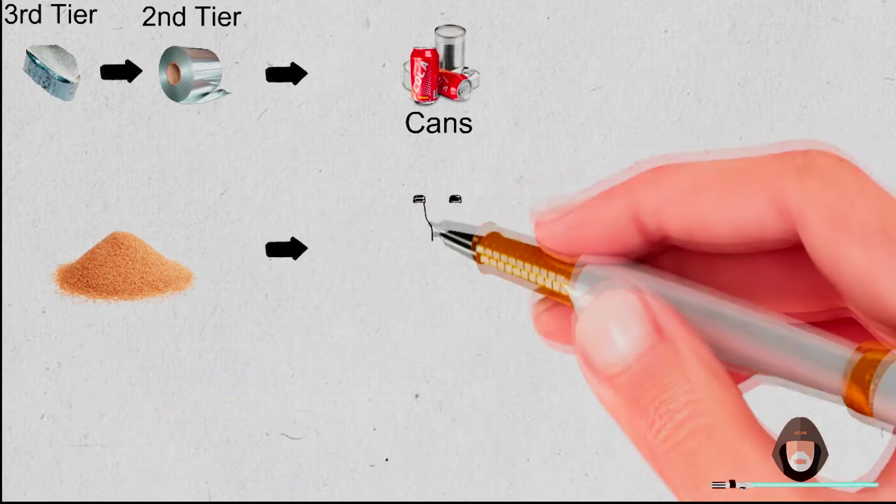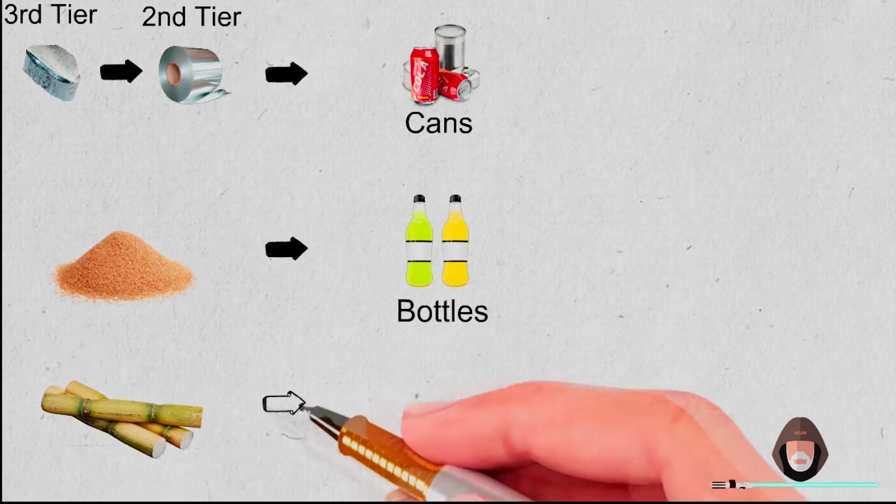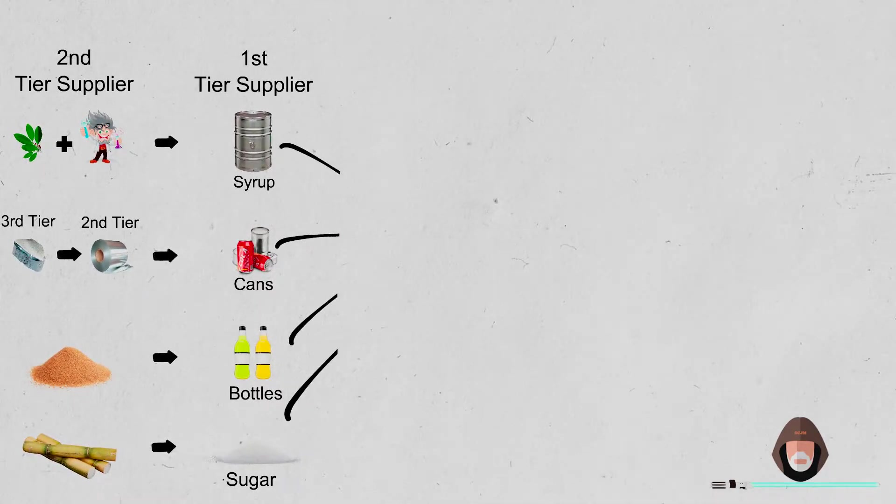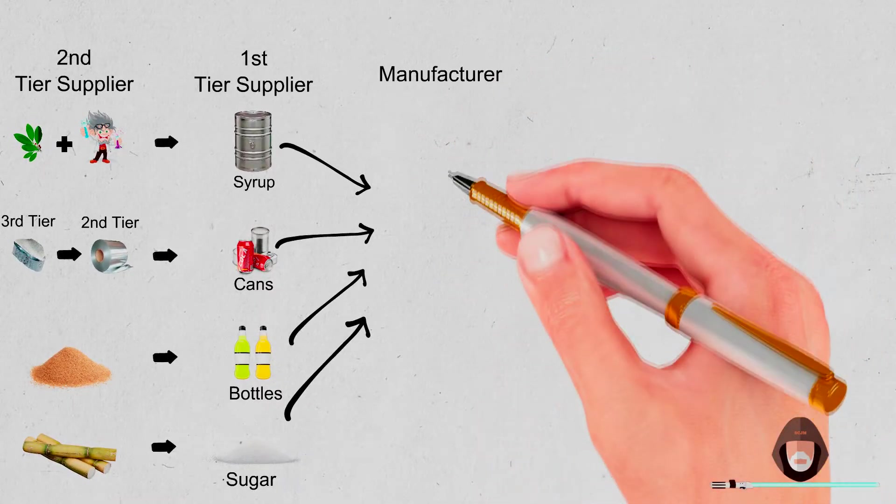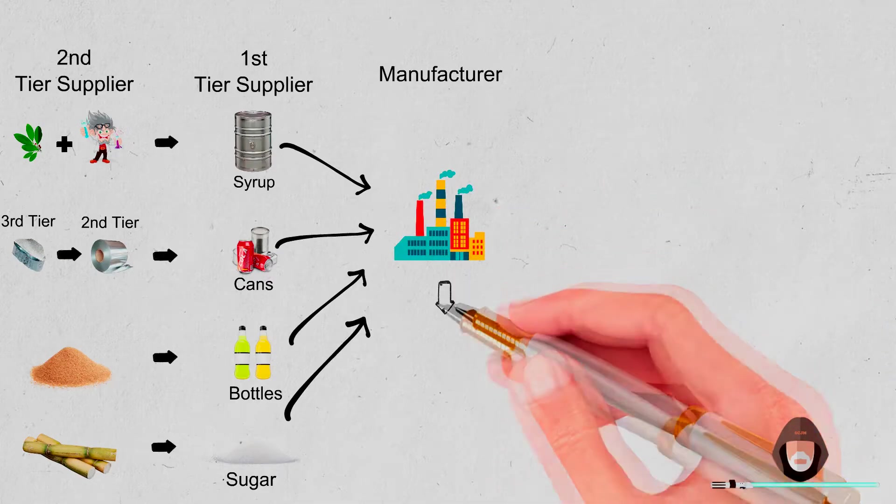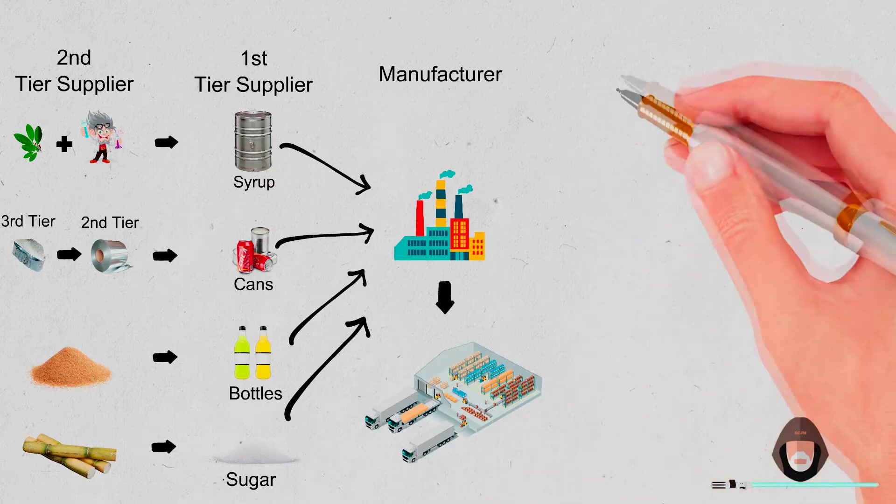For the soft drink manufacturer, the syrup is just a raw material. The same applies to the cans from aluminum, glass bottles from sand and sugar from the cane. The manufacturer receives all raw materials from his first tier suppliers, mixes it with water and CO2 to produce his soft drink, then stores it in his warehouse.